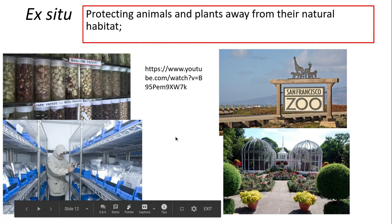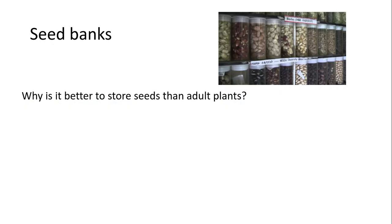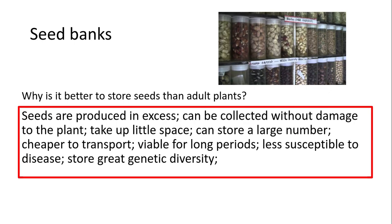Another ex-situ example is seed banks — I highly advise watching YouTube clips about these. There's a notable one in the Antarctic that stores seeds from all around the world. It's better to store seeds rather than adult plants because seeds can be collected without damage to the plant, take up very little space, are cheaper to transport, and are viable for a long period of time. They're also less susceptible to disease.